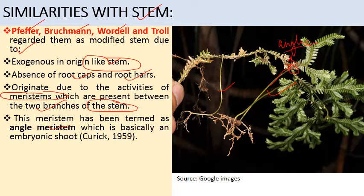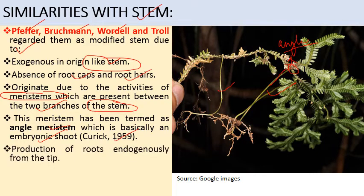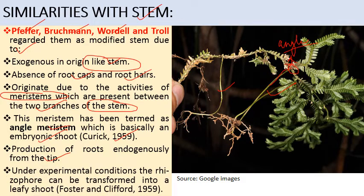Further supporting the stem view: rhizophores produce roots endogenously from their tips, and under experimental conditions the rhizophore can be transformed into a leafy shoot, as reported by Foster and Clifford in 1959.